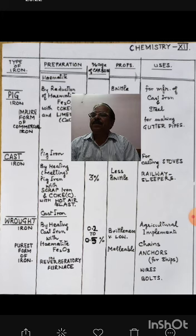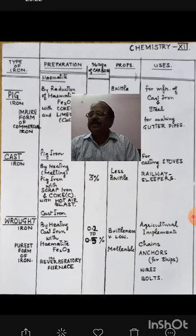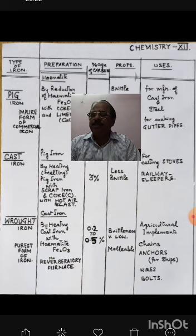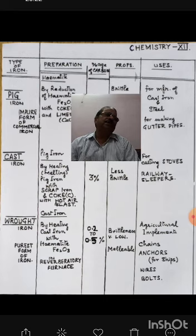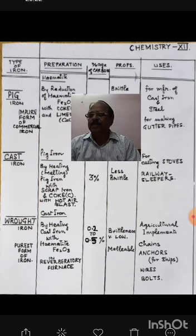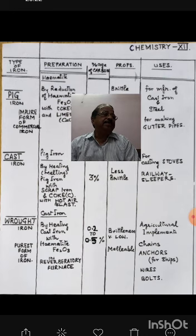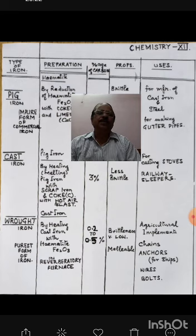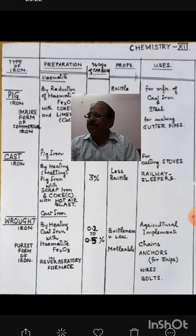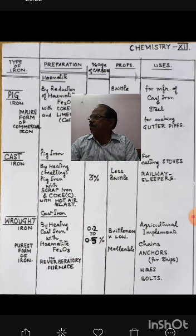As a result, the percentage of carbon gets decreased. Looking at the properties of wrought iron: the brittleness is very low, and it is malleable. The uses of wrought iron include agricultural implements — all tools and tackles used in agriculture. Big chains are also made from wrought iron; when ships come to port and put down their anchors, the large chains attached to ships are made from wrought iron. Wrought iron is also used for making wires and bolts.